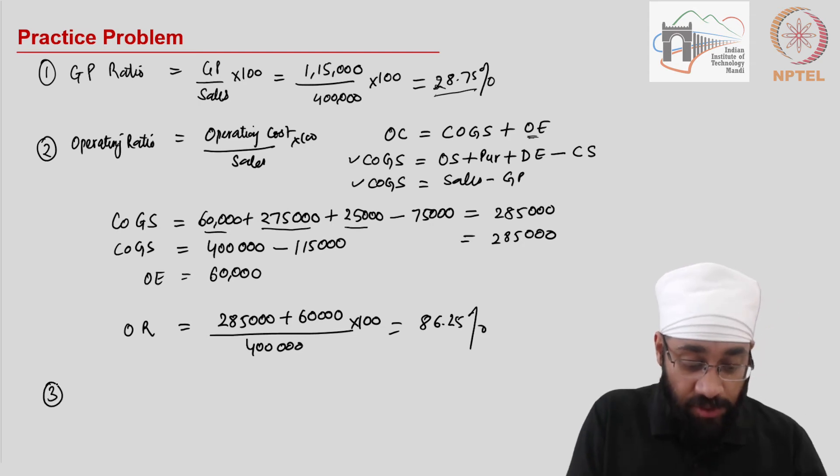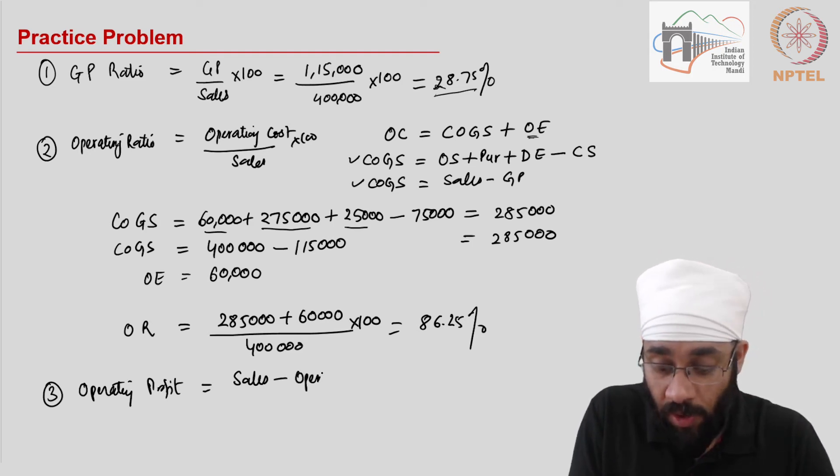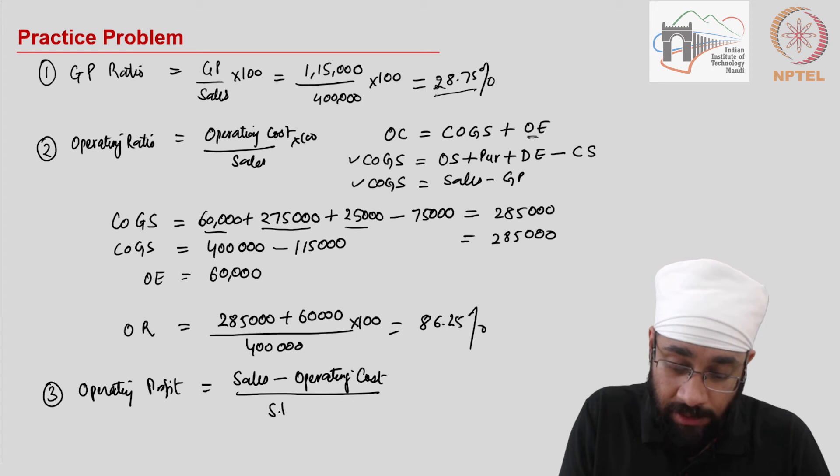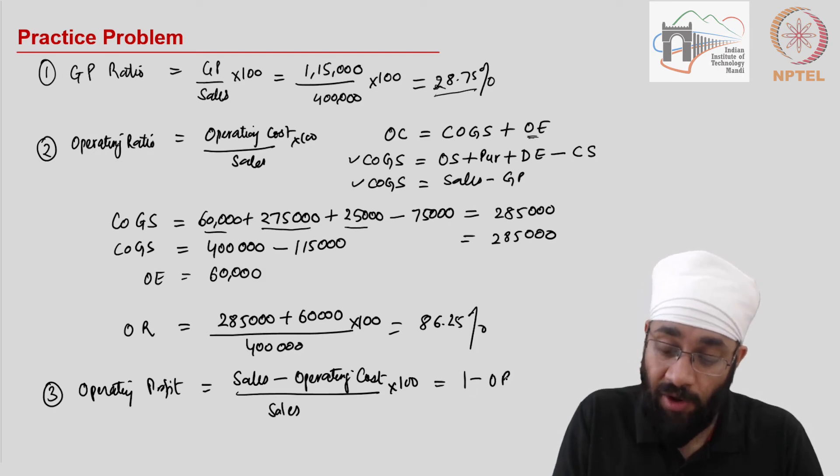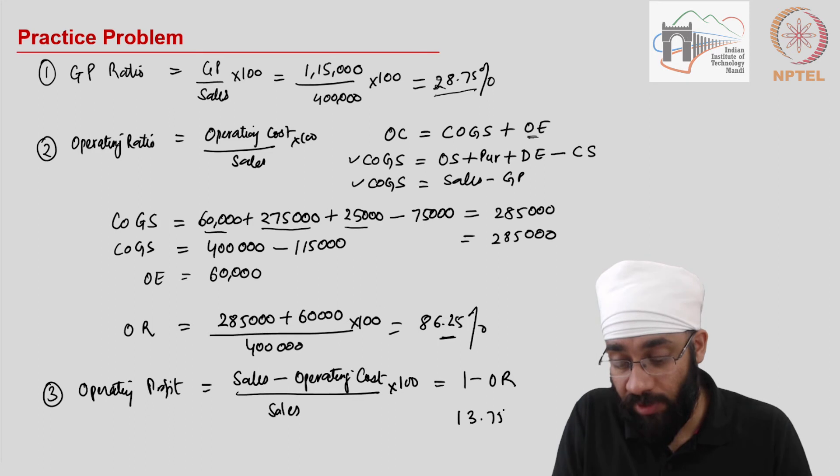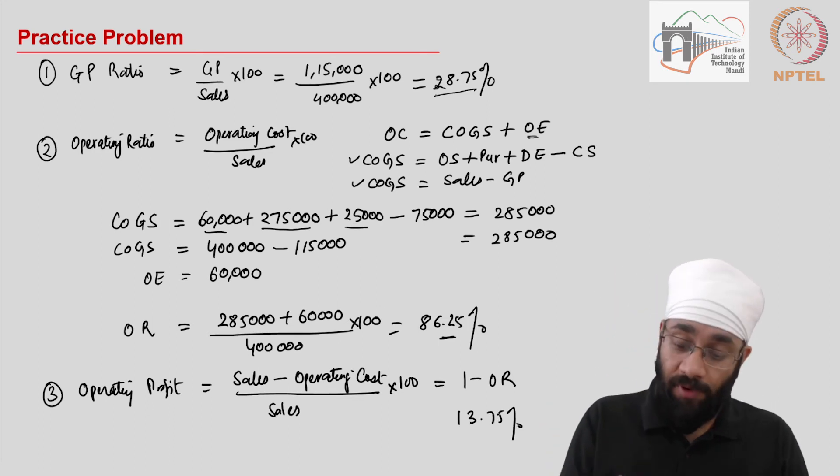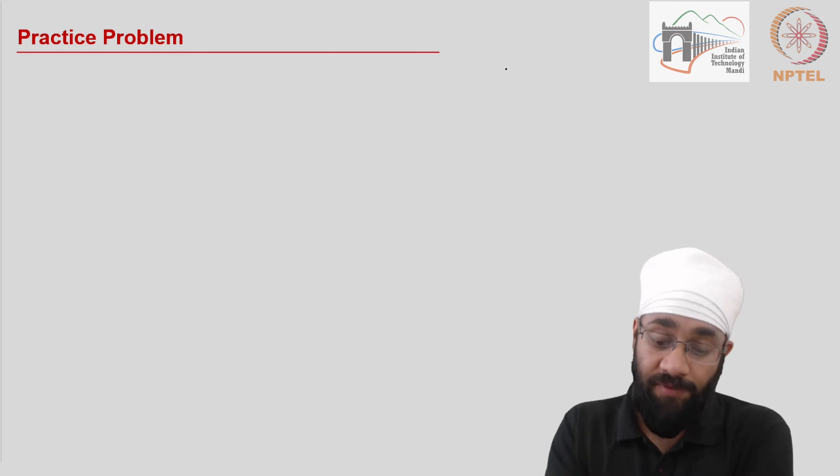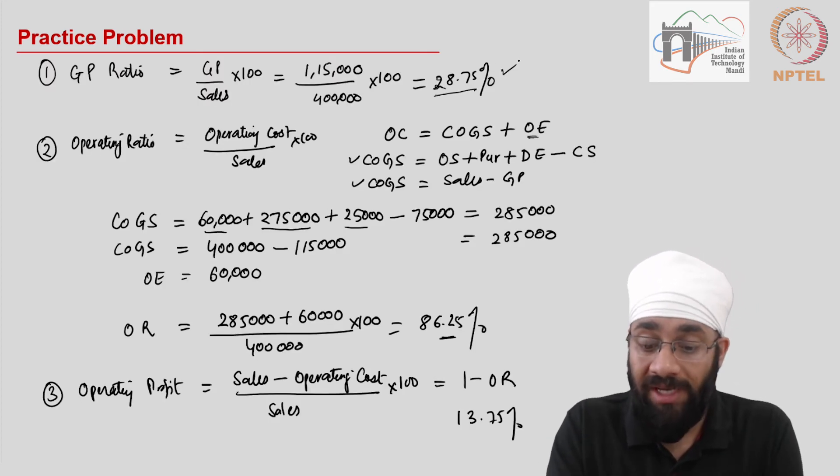Let us look at the third ratio which is the operating profit ratio. Operating profit ratio is nothing but sales minus the operating cost. Sales minus operating cost gives you the operating profit. And you divide it by the sales again to figure out the operating profit ratio. So it is going to be equal to 1 minus the operating ratio which is this. Therefore, our operating profit ratio comes out to be 13.75%.